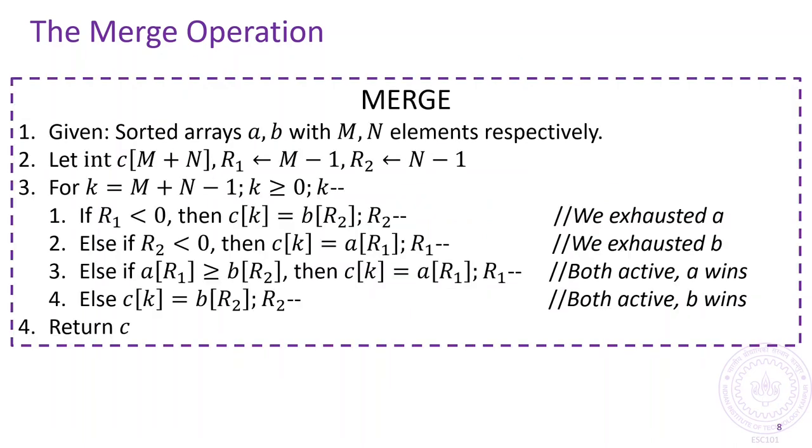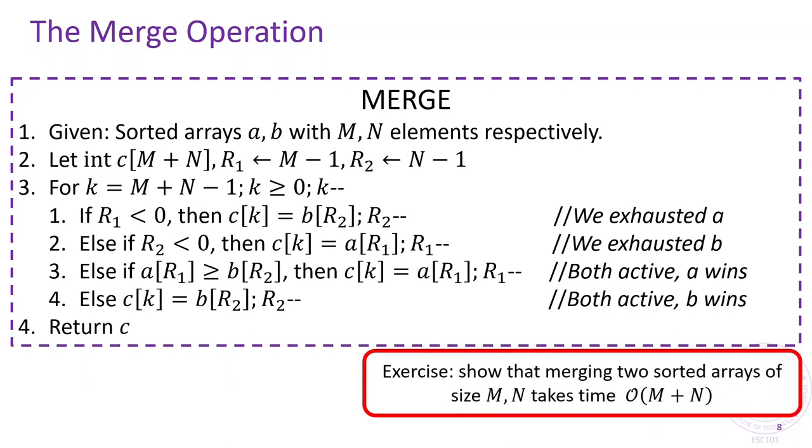Here is a pseudocode for the merge step. As an exercise, show that merging two arrays of size m plus n takes at most order m plus n time. You would notice that this merge algorithm is not an in-place algorithm since it first allocates a new blank array with m plus n elements.